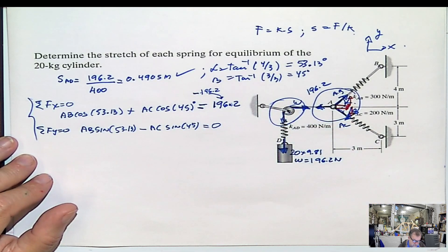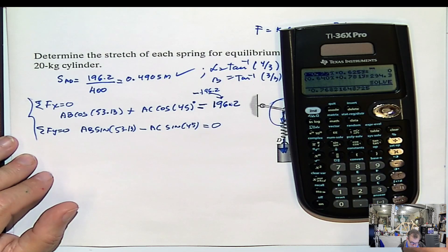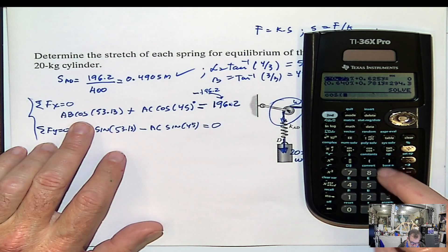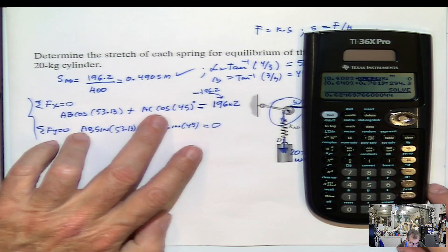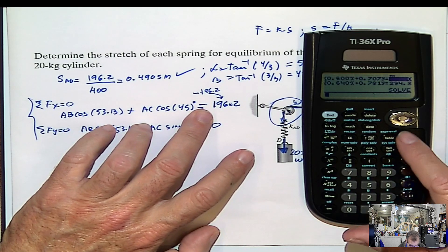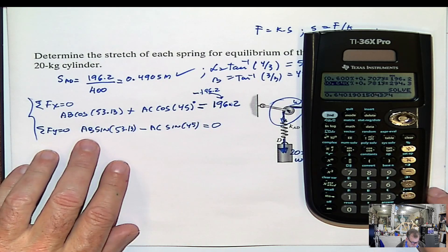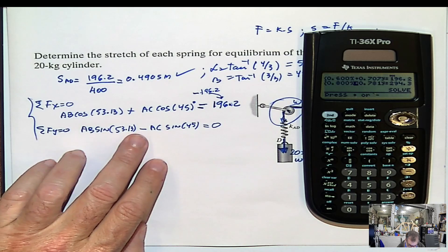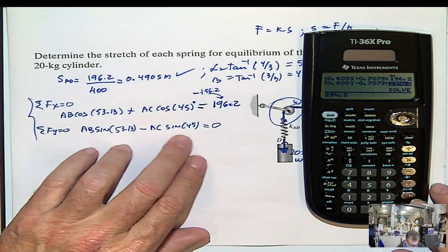Surprise, surprise. System of equations, two equations, two unknowns. Let's solve that two by two. First term, this one. Cosine of 53.13 plus cosine of 45 equals 196.2. Second equation, sine of 53.13 minus sine 45 equals 0.